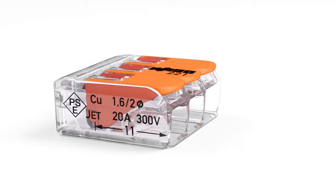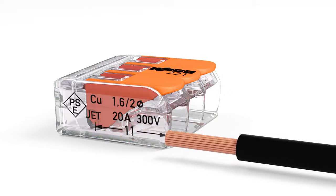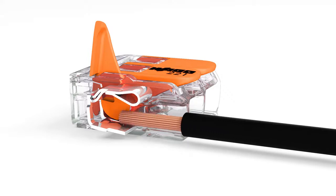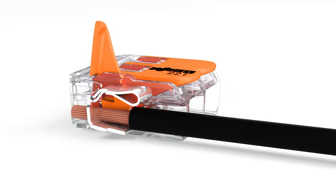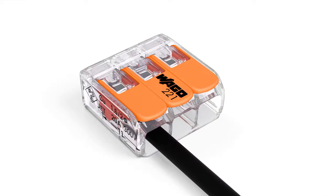Wiring is very easy. Strip conductor to 11 millimeters or 0.43 inches. Open the clamping unit via integrated lever. Insert conductor. Compared to its predecessor, the 222 series, the 221 series operating levers can now be opened using noticeably less force. Then lower the lever to close the clamp.